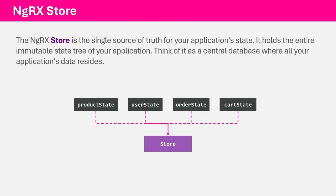Let's start with store. A store is the single source of truth of your application state. For example, in our Angular application we can have a state for managing products. In that product state, we will have an array of all the products and a single product object that stores information about the selected product. Similarly, in the user state, we can have a list of all users and a state for the currently logged-in user. We can also have an order state and a cart state. All these states together create a store, which keeps all the application state in a single place. Whenever we want to access state data, we can access it directly from the store — that's why we say a store is the single source of truth.